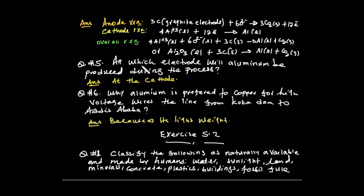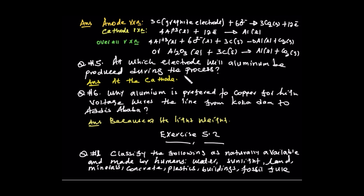Question number five: which electrode will be consumed during the process? The anode — the carbon electrode — is consumed. It is the positive electrode, the anode. Aluminium is deposited at the cathode.